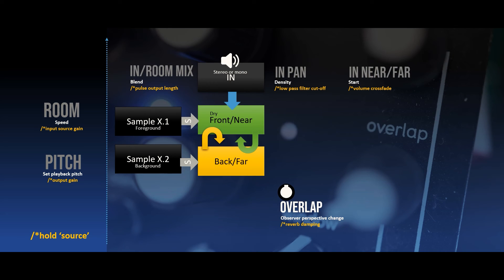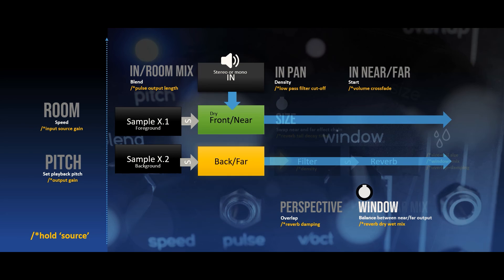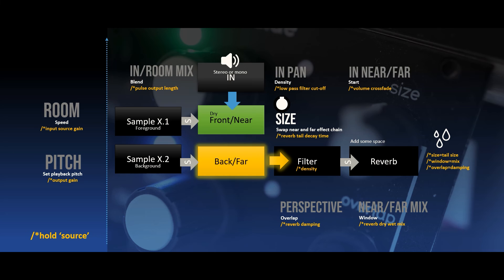The overlap knob changes the observer's perspective between the near and far sides of the realm. Source plus overlap sets reverb damping. The window knob controls the balance between the near and far environmental loops. Source plus window controls the reverb's dry-wet mix. Finally, the size knob morphs between sending the backdrop or the front loops to the effects chain. Source plus size sets the reverb tail length.